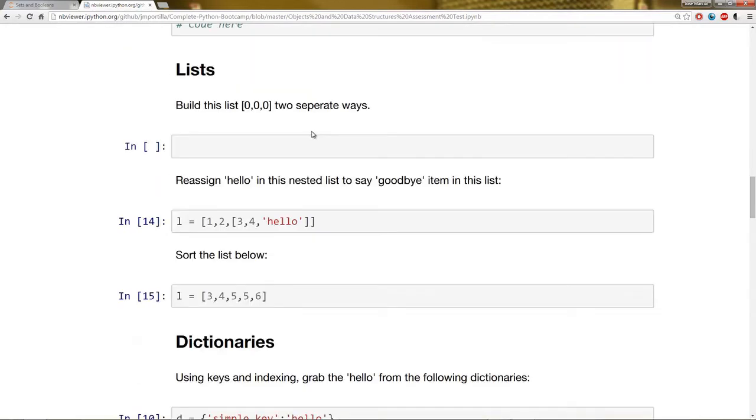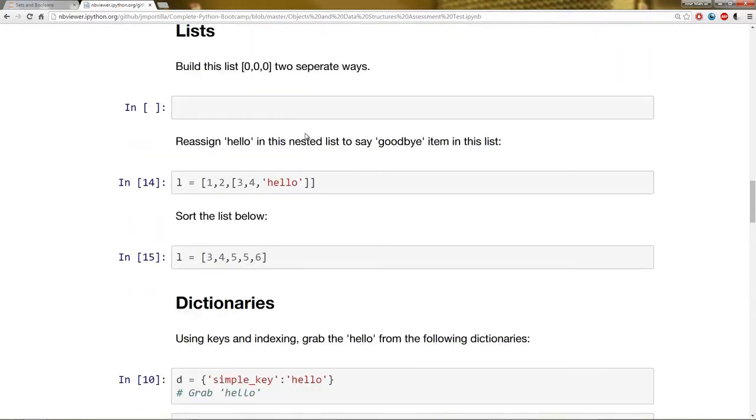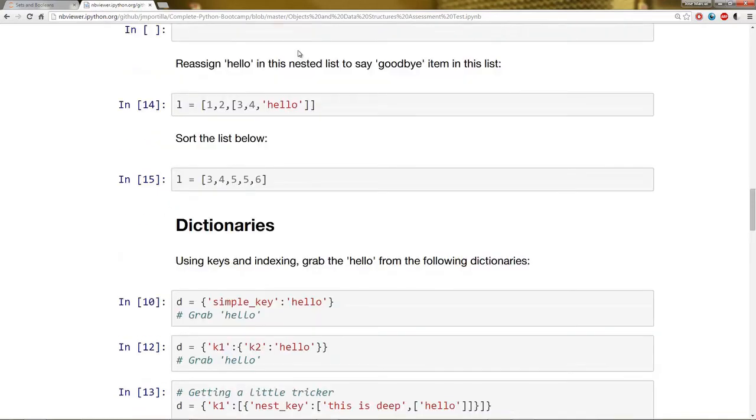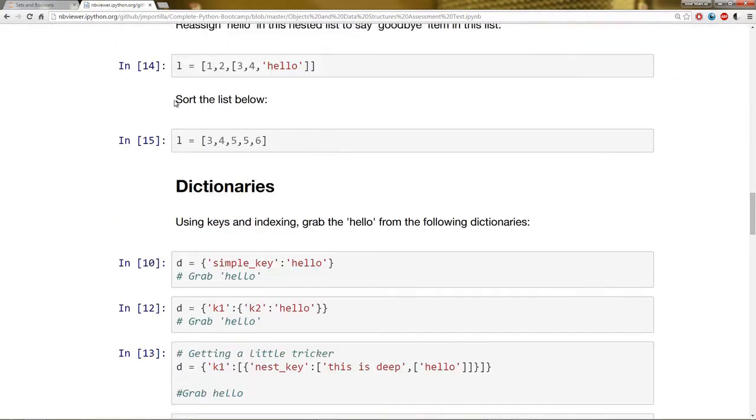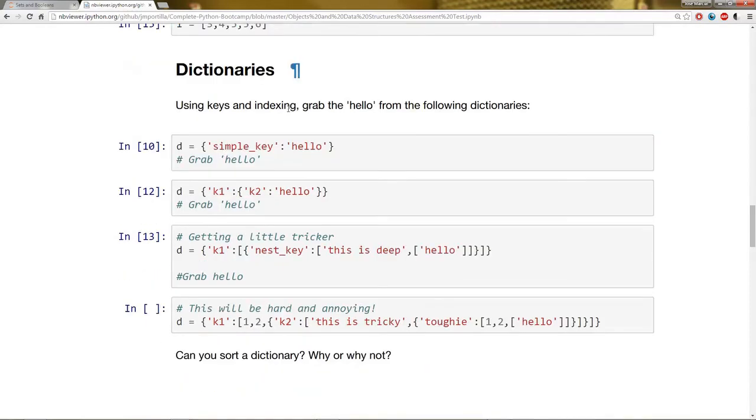Moving along, we have lists. I want you to build this list 0, 0, 0, 3, 0s using two separate ways to build it out. After this, I want you to reassign the hello in this nested list to say goodbye. So that's going to check your understanding of index levels for a nested list. Then I want you to sort the list below.